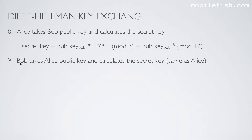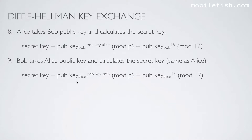Step 9. Bob takes Alice's public key and calculates the secret key. This secret key is the same as Alice's secret key. Bob uses Alice's public key and his own private key as an exponent.